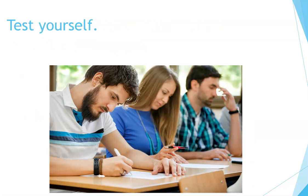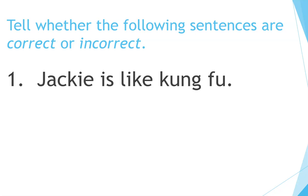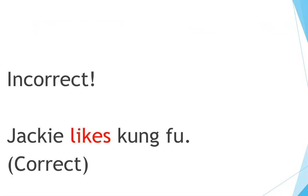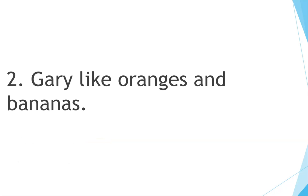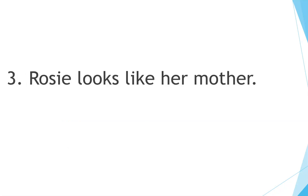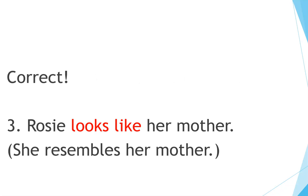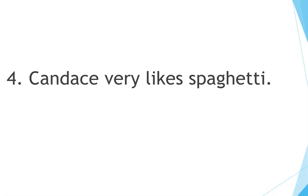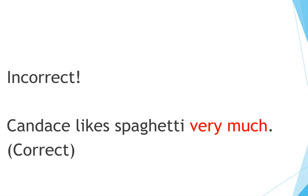Test yourself. Tell whether the following sentences are correct or incorrect. Number one: Jackie is like Kung Fu. Incorrect. Jackie likes Kung Fu. Correct. Number two: Gary like oranges and bananas. Incorrect. Gary likes oranges and bananas. Number three: Rosie looks like her mother. Correct — she resembles her mother. Number four: Candace very likes spaghetti. Incorrect. Candace likes spaghetti very much.